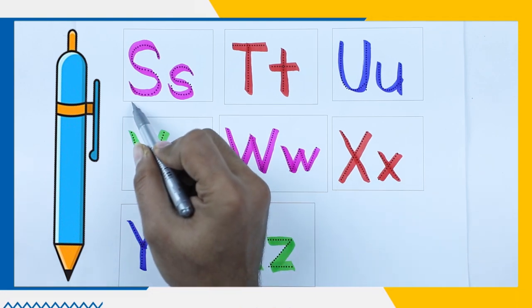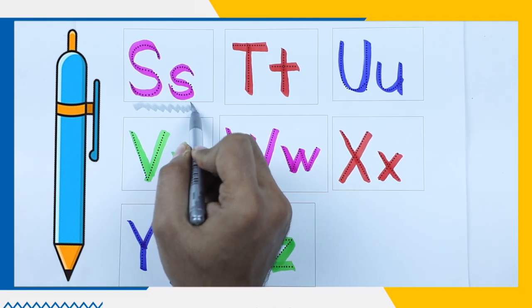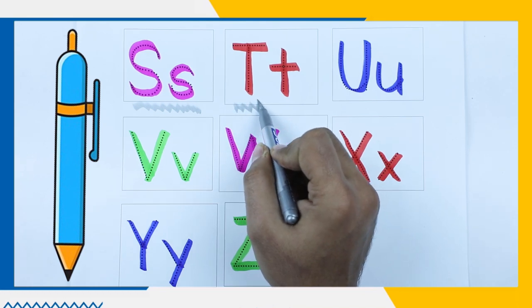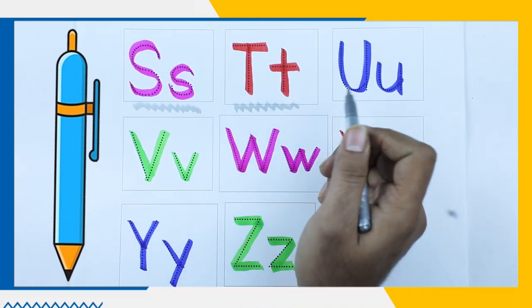It's a S with pink color. S for sheep. Red color. It's a T, T for tiger.